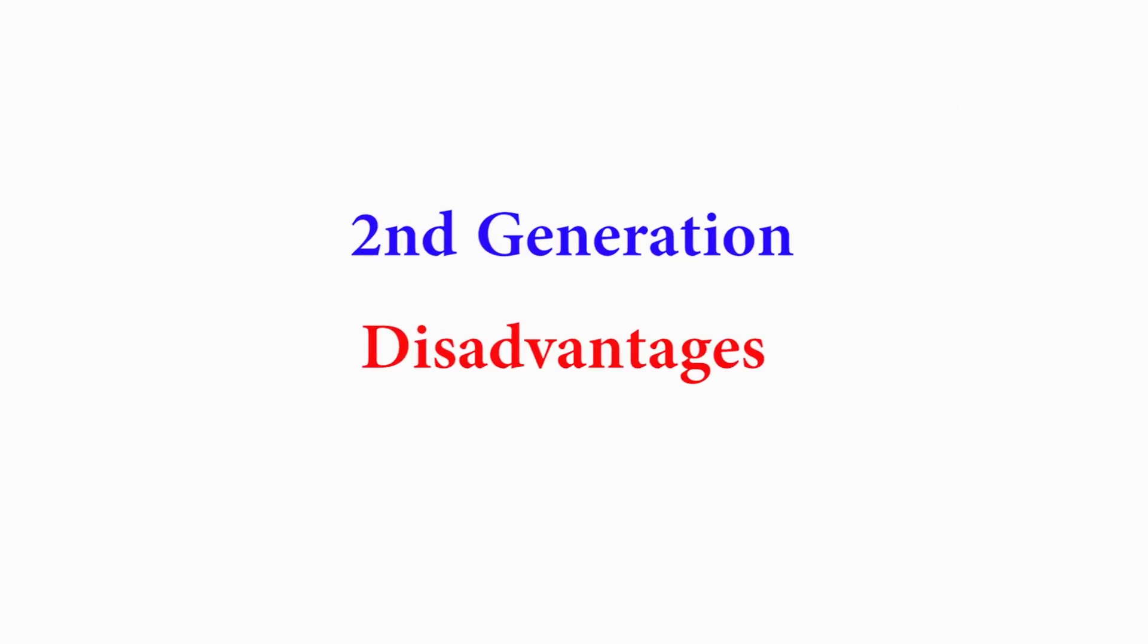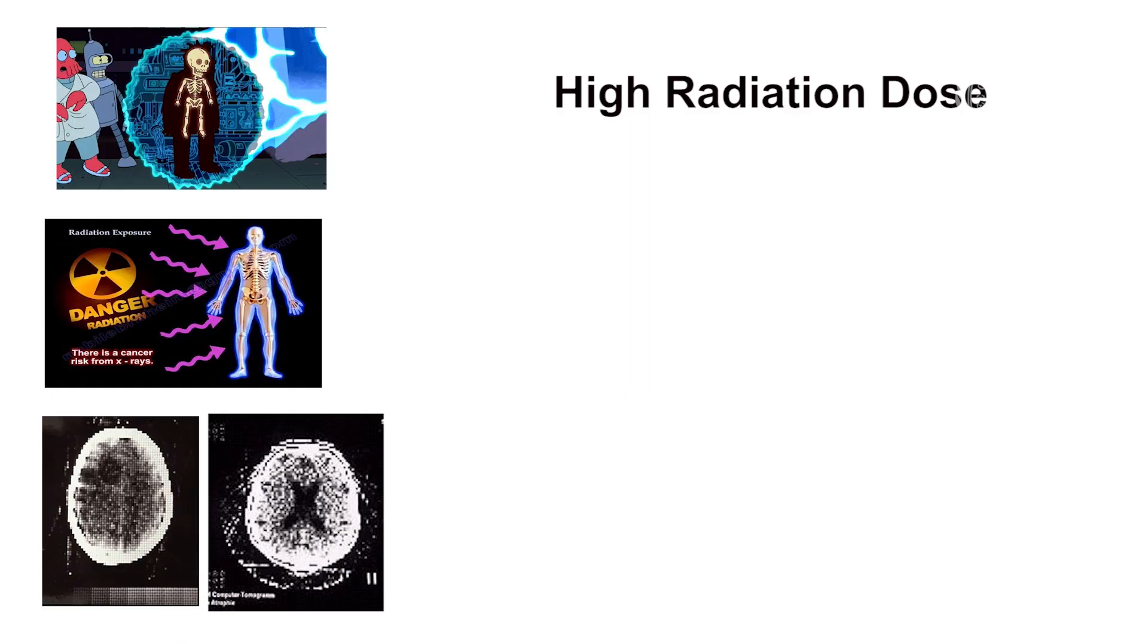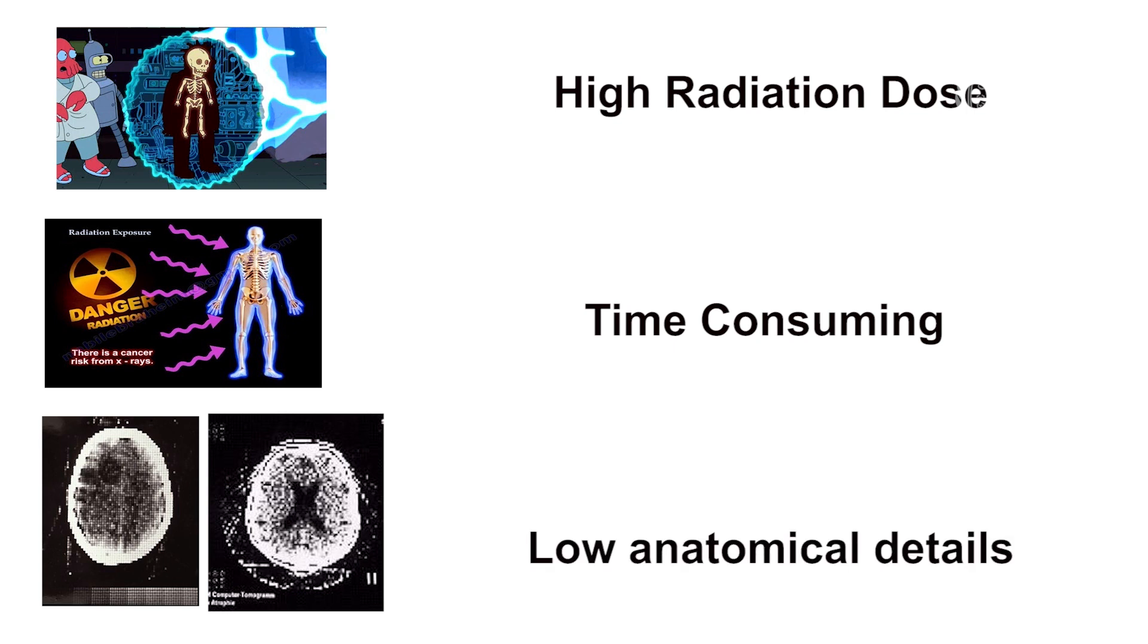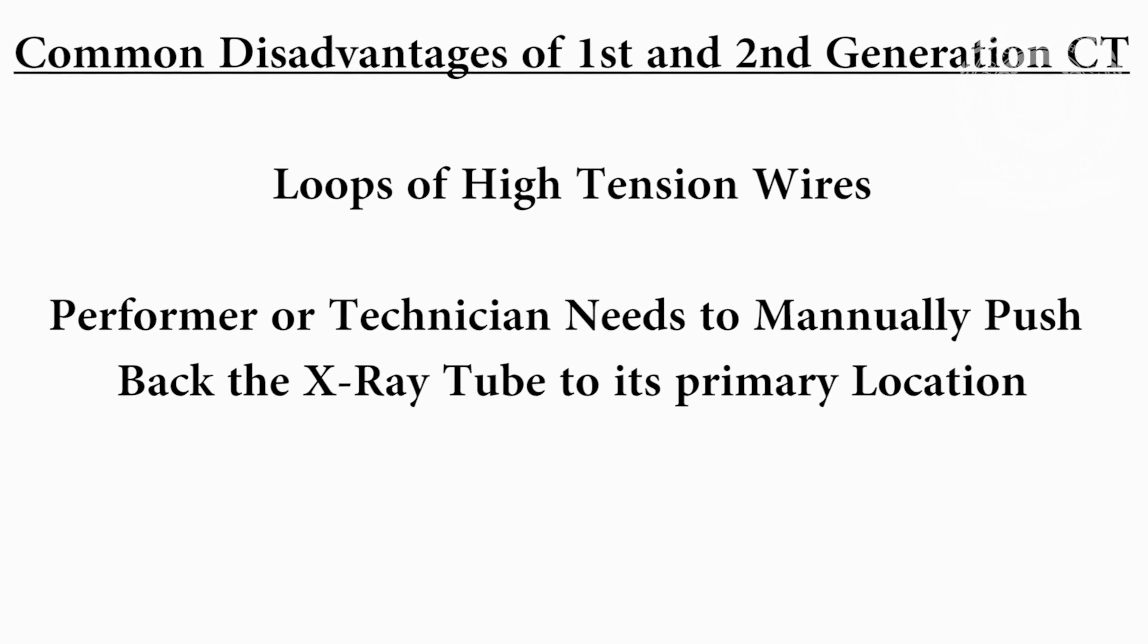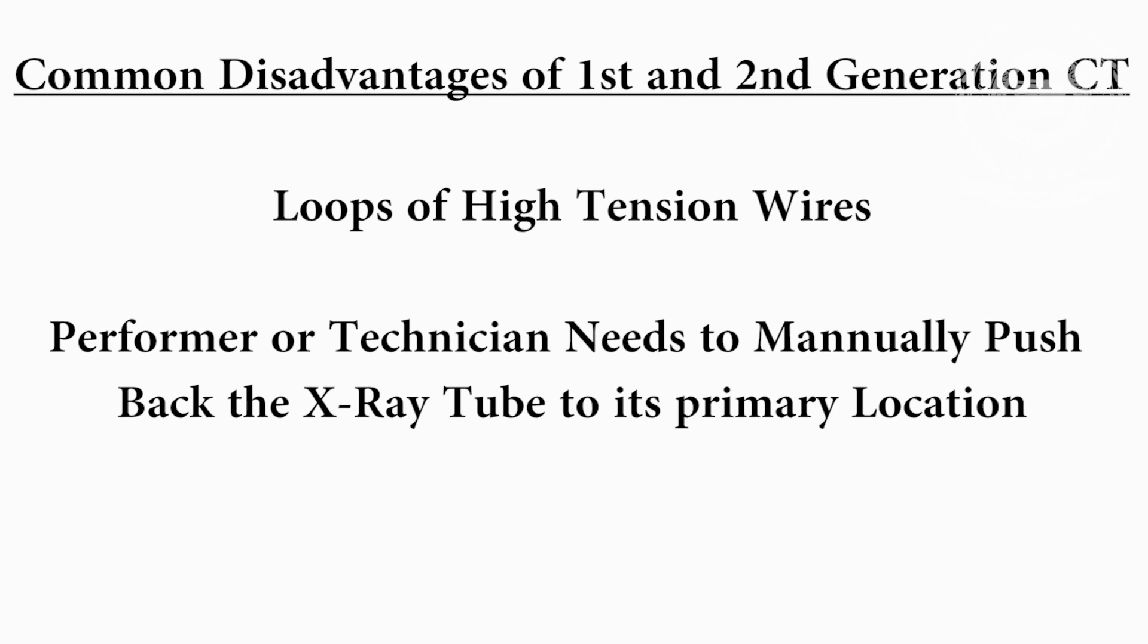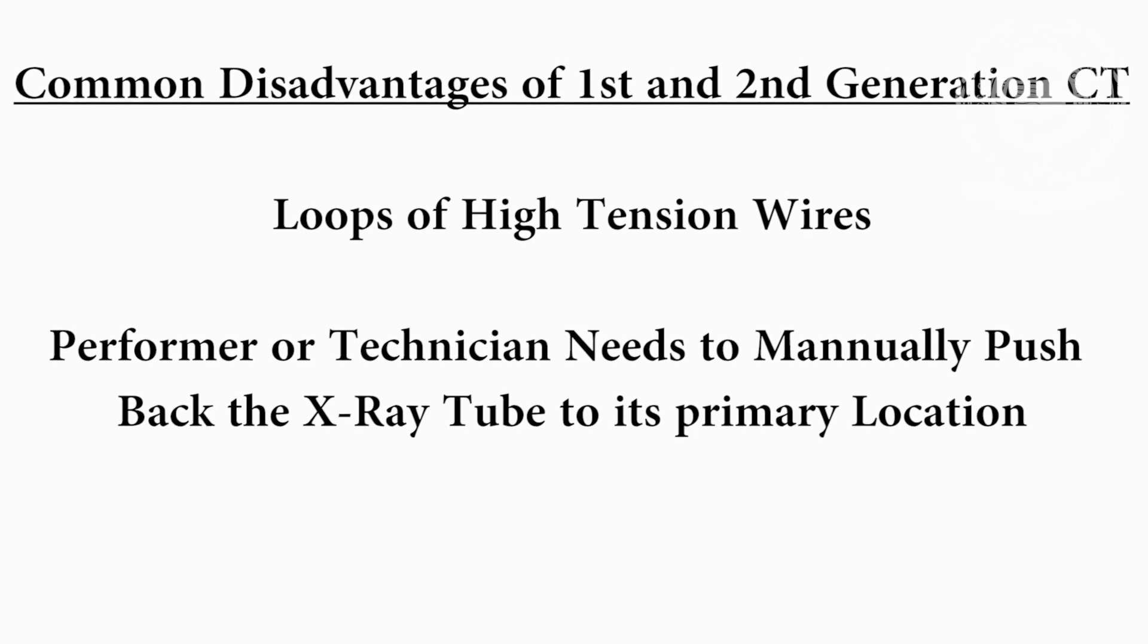But the other disadvantages of first generation were not rectified like high radiation dose, long scan time, poor image reconstruction technique, and still low anatomical details. One more thing, there is one common disadvantage in both generations and that was loop of high tension wires due to lack of 360 degree rotation of X-ray tube in the gantry.